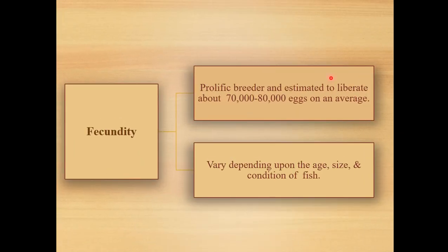About fecundity: fecundity means the number of eggs laid by a female fish per gram of body weight. It depends on the weight of the ovary and the species. The oil sardine is a prolific breeder, estimated to produce 70,000 to 80,000 eggs on average. However, scientist Raja (1971) observed fecundity of 40,000 to 45,000 eggs. Fecundity varies depending upon the age, size, and condition of the fish.